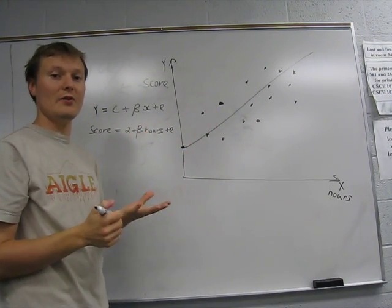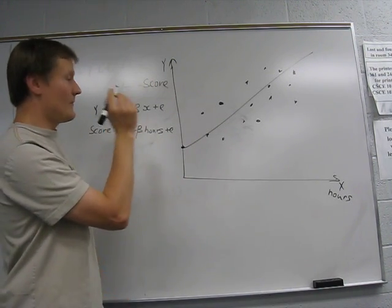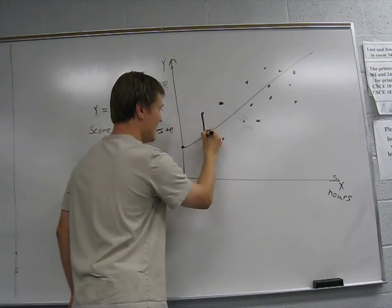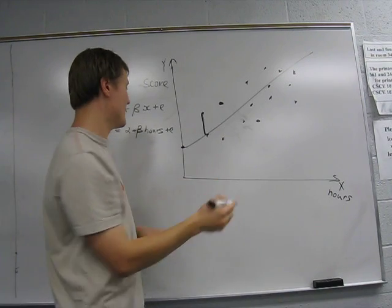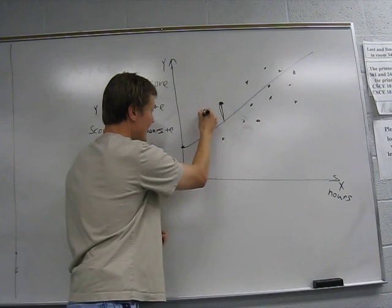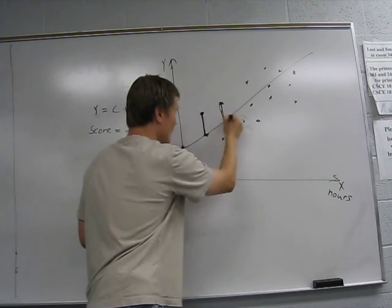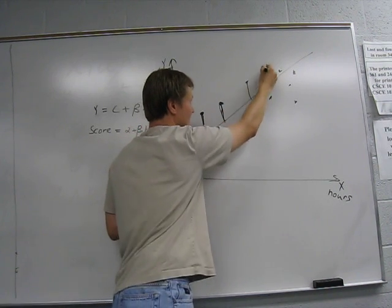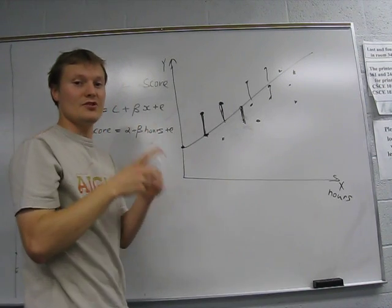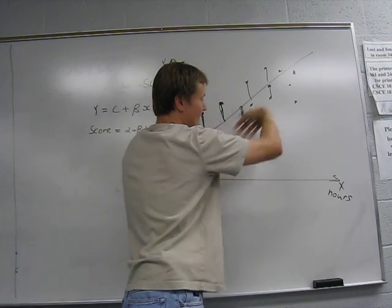So how do we get this line? Ordinary Least Squares, what it's doing: it takes this distance, squares it, adds this distance. This is the distance between the actual value and the predicted value. So it takes all those values, finds all those differences, squares it, and then sums all of this up.